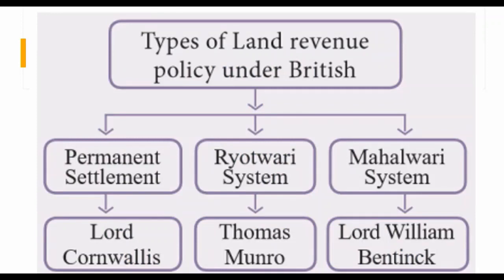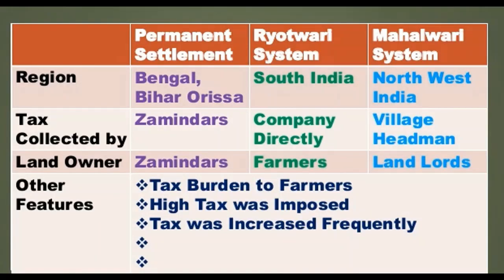Permanent settlement was introduced by Lord Cornwallis, Ryotwari system by Thomas Munro, and Mahalwari system by Lord William Bentick. Permanent settlement was introduced in Bengal, Bihar, and Orissa. Ryotwari was introduced in South India and Mahalwari in Northwest India. In the permanent settlement, taxes were collected by zamindars. In the Ryotwari system, tax was collected by the company directly. In the Mahalwari system, the village headman was assigned the task of collecting revenue from the village and handing it over to the company officials.